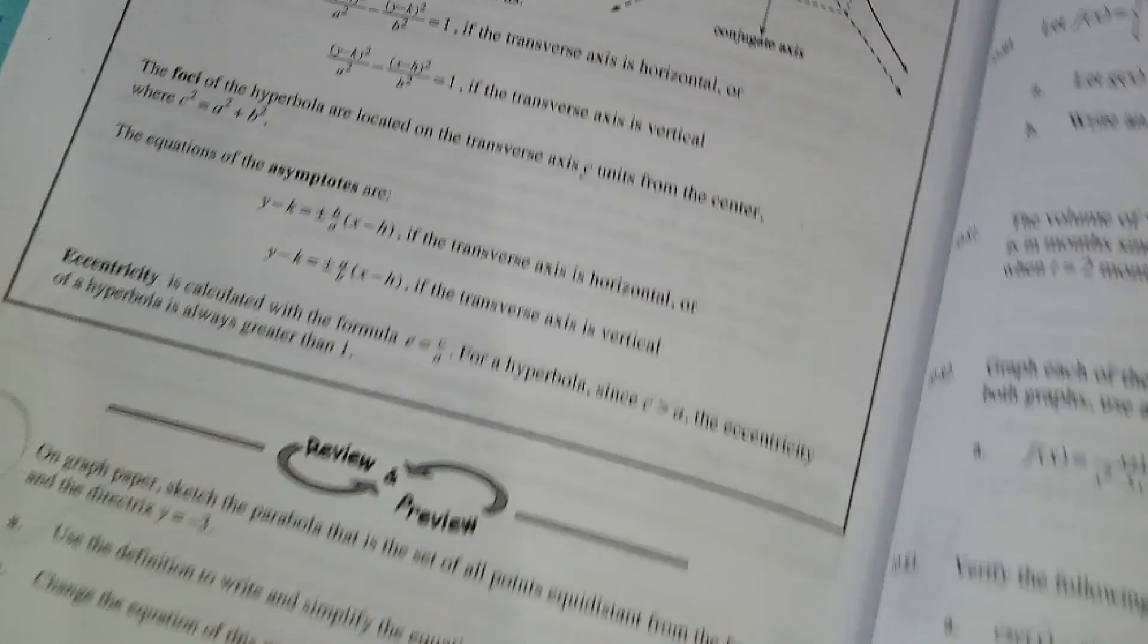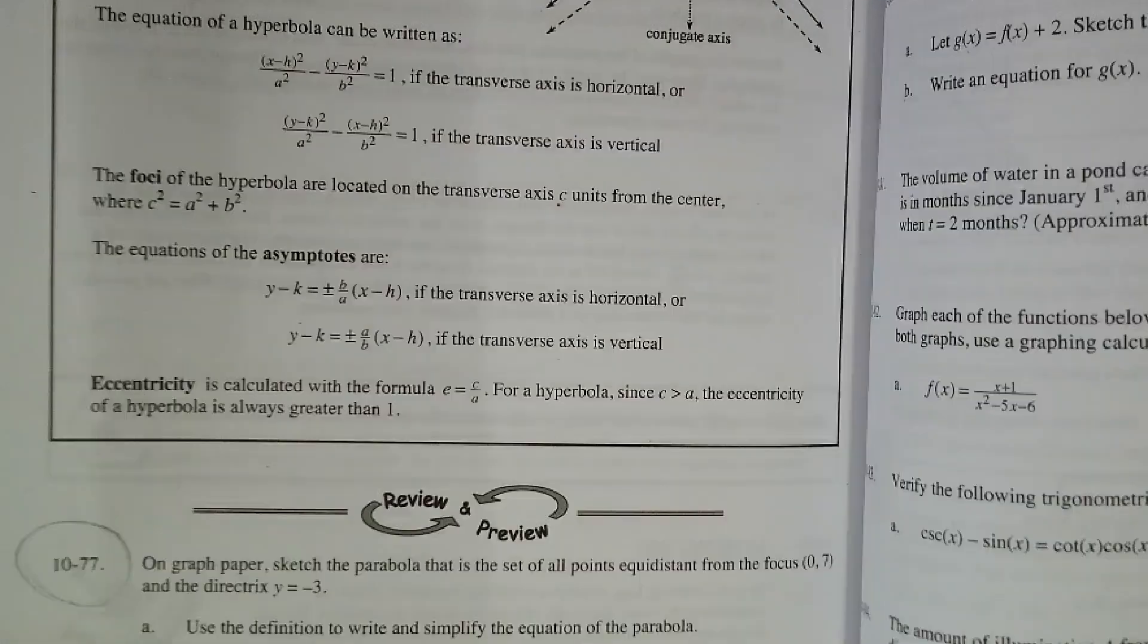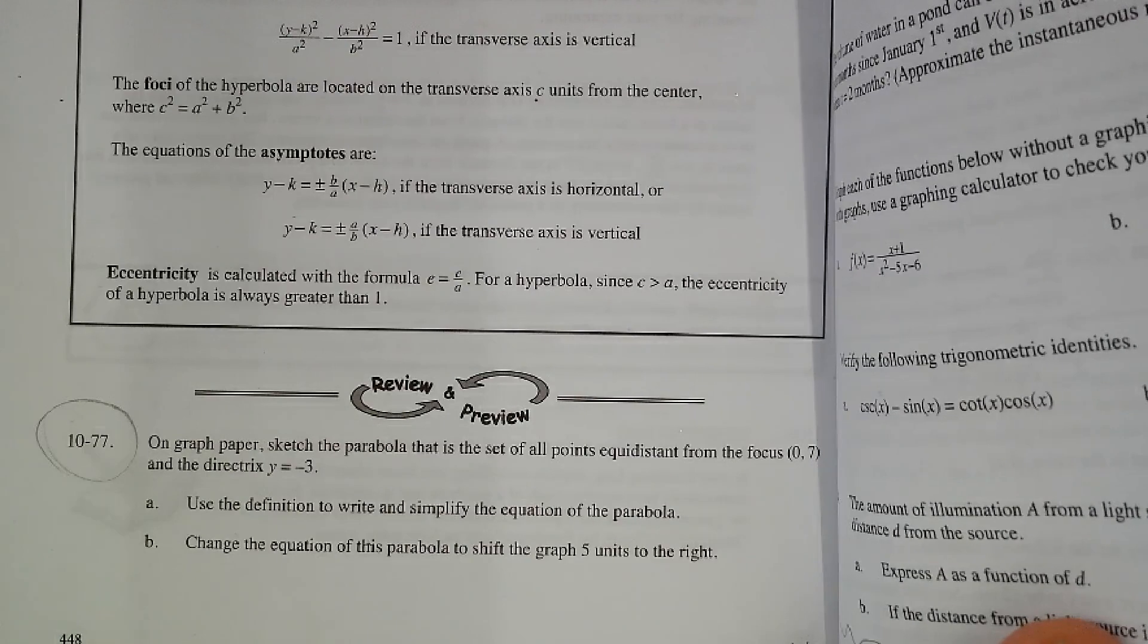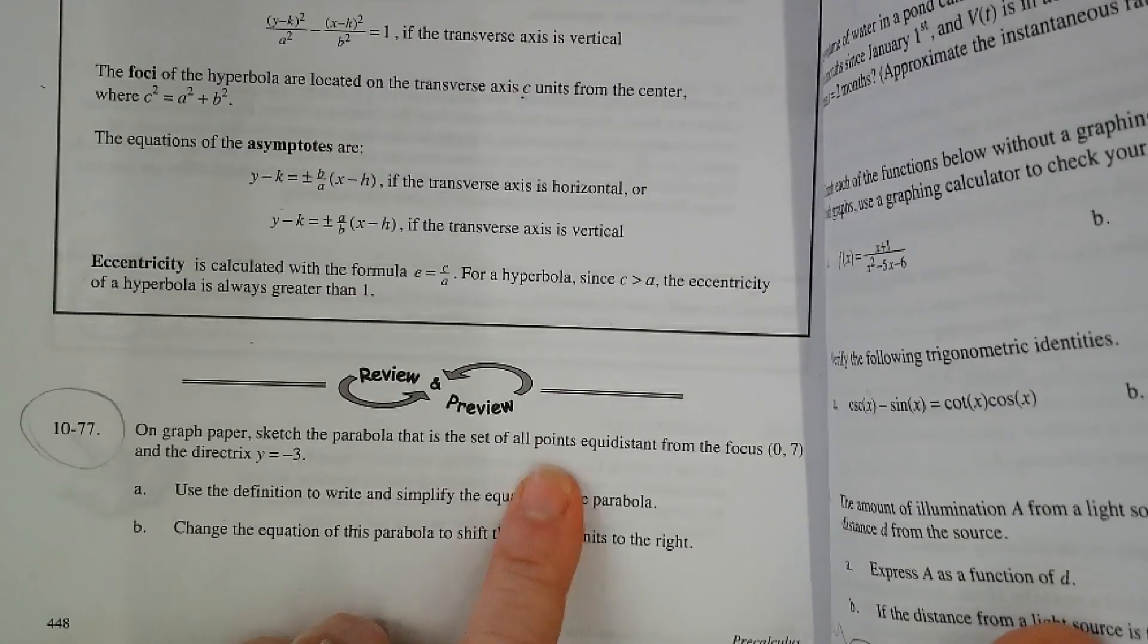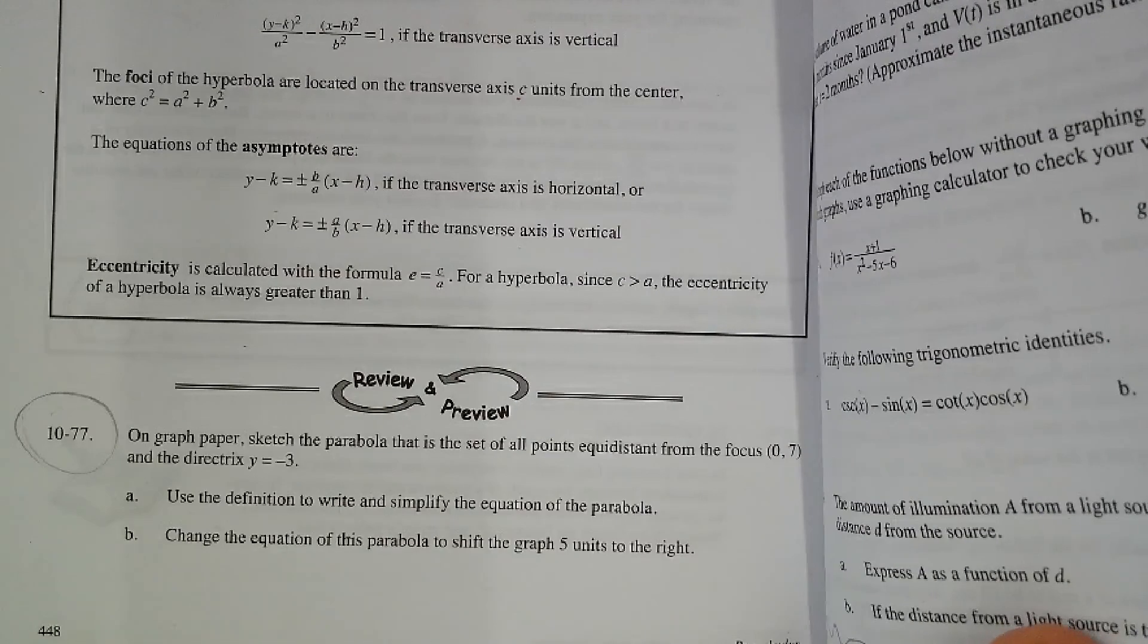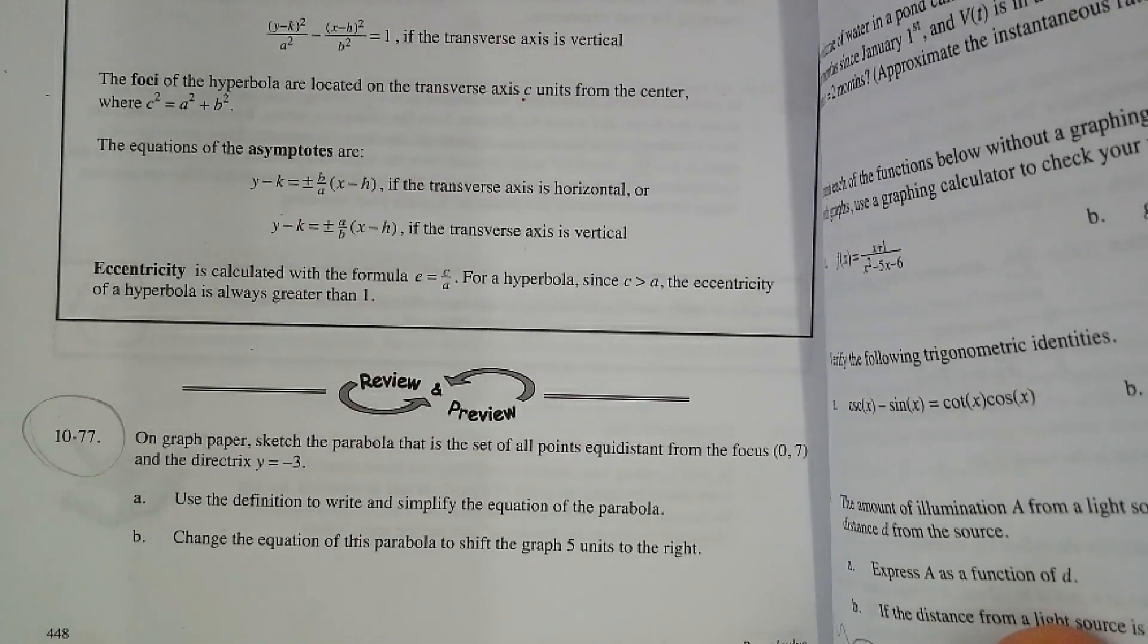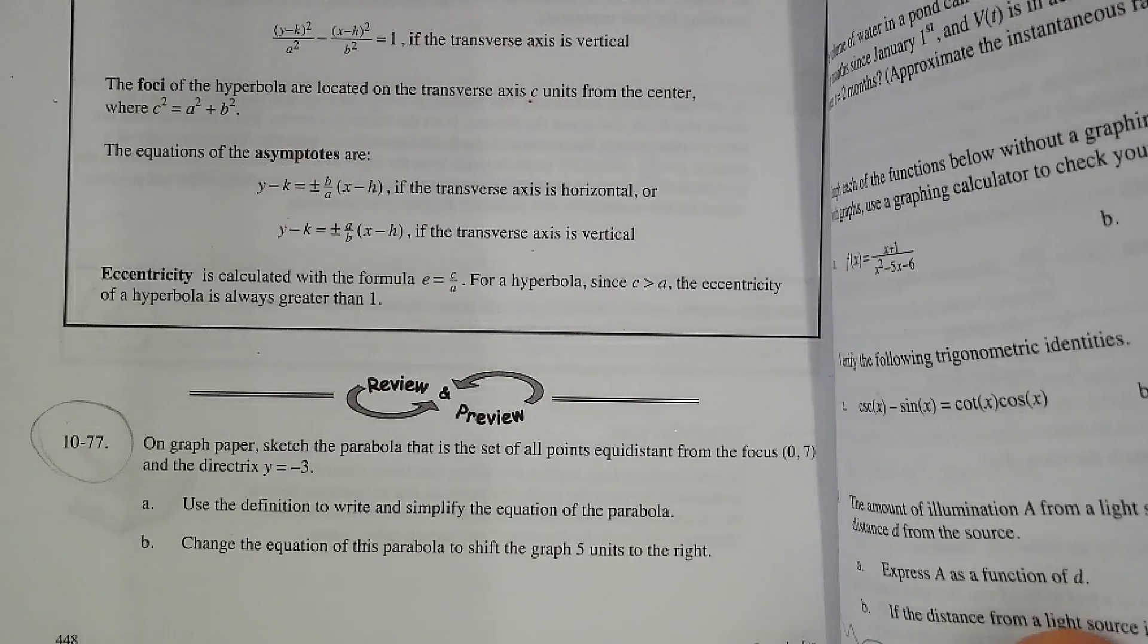Here's pre-calc, problem 10-77. I had to pause it for a phone call. It's asking us to sketch a graph of a parabola. It's just going to be a sketch, not a full accurate graph. We want the focus at (0, 7) and the directrix at y equals negative 3, and it wants us to use the definition to write and simplify the equation of the parabola.